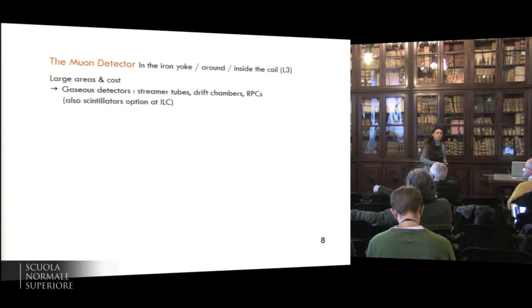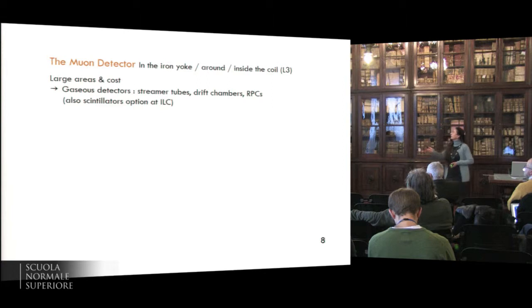And the same remark is valid also for the HECAL. For the muon detector, it was placed either in the iron yoke, or around, or even inside the coil for L3. And the large area of this detector on the cost brings a choice of the gas-based detectors for this detector.